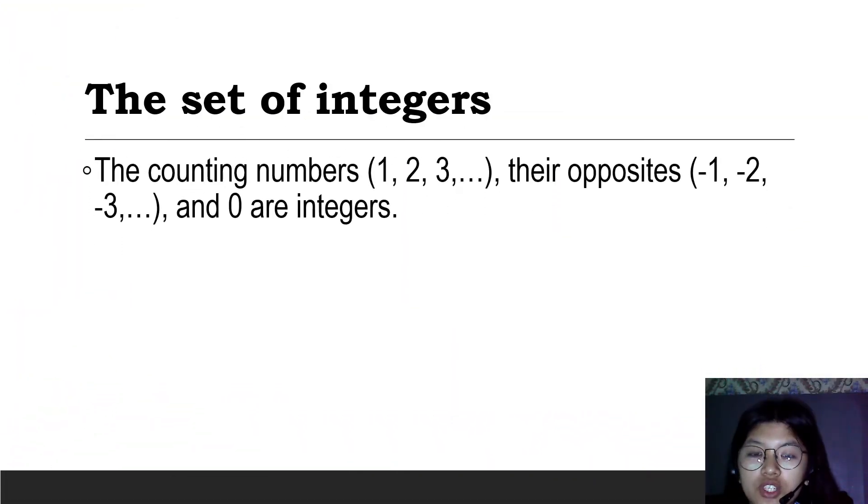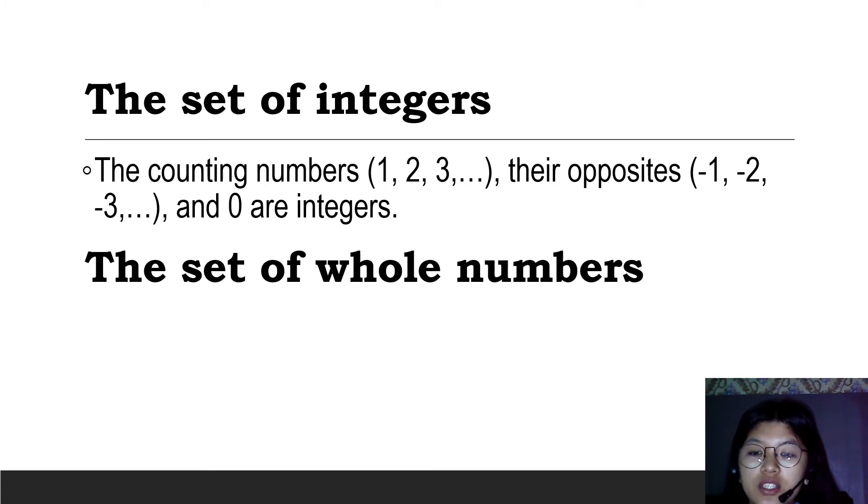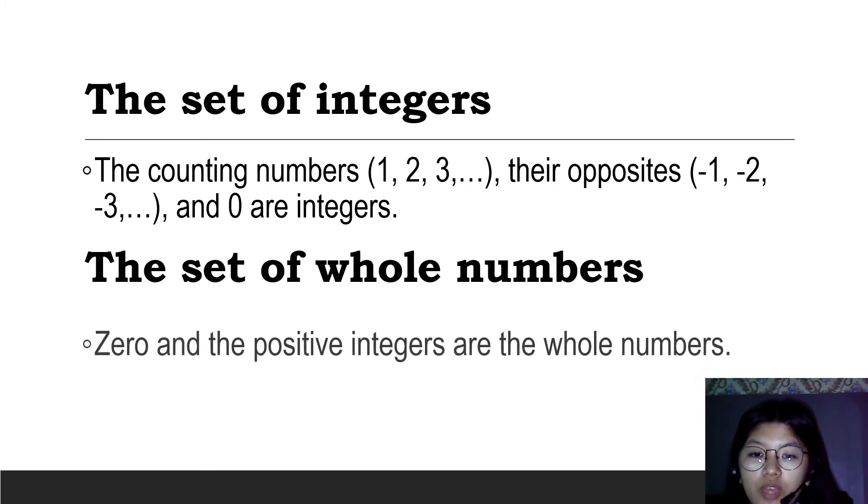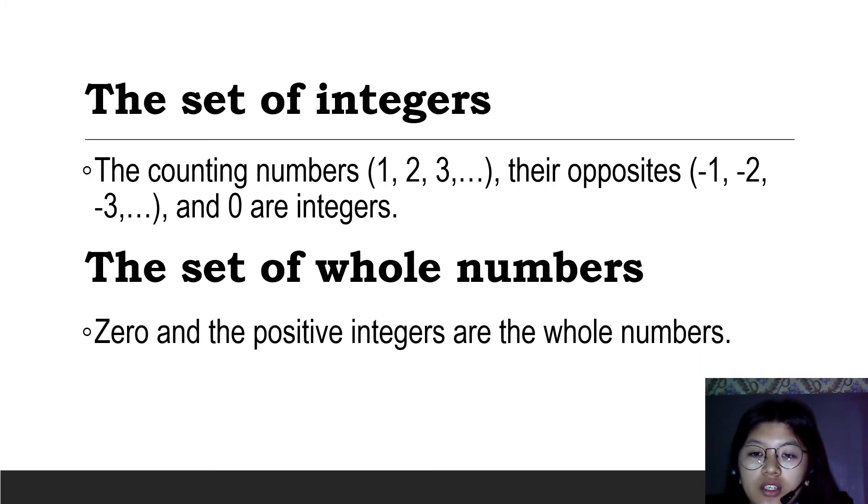The set of integers: the counting numbers 1, 2, 3 and so on, and their opposites negative 1, negative 2, negative 3 and so on, including 0, are integers. The set of whole numbers: 0 and the positive integers are the whole numbers.